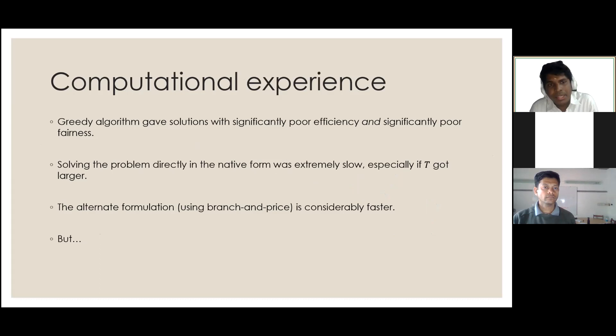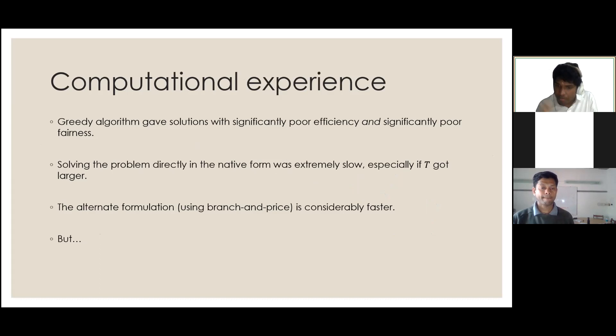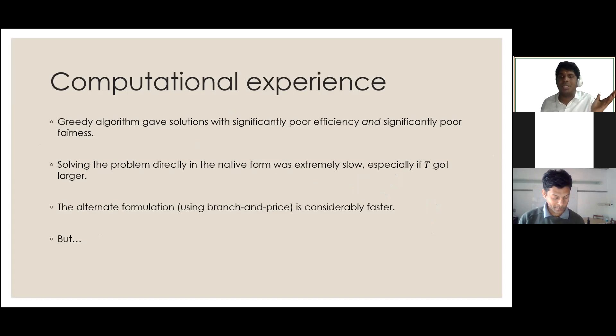Computationally, greedy algorithms were terrible, and solving the problem in its native integer programming form was very slow — especially as the number of decision-making rounds increased. But the alternate formulation using column generation and branch-and-price was considerably faster: where the direct formulation failed to find good feasible solutions in one to one-and-a-half hours, branch-and-price solved the problem within one to one-and-a-half minutes.